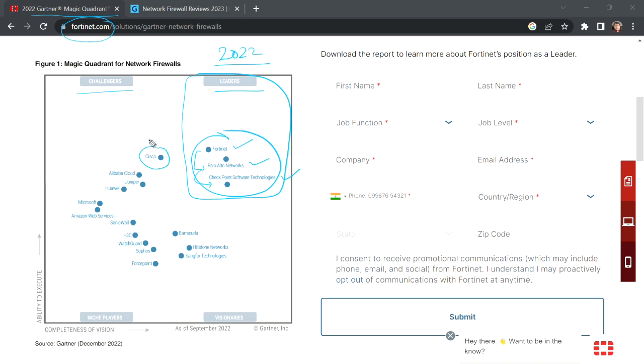We also have challengers like Cisco which is competing. We have Alibaba Cloud, Juniper, Huawei. There are different niche specific firewalls like AWS, SonicWall, H3C. Similarly, we have some visionaries that are good but not at the top right now. Whatever we are learning with Palo Alto firewall, we are on the trend right now.